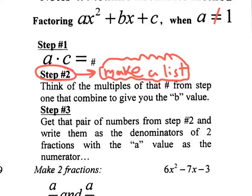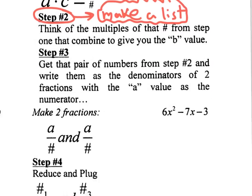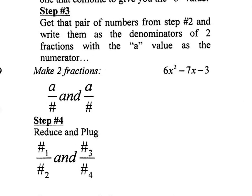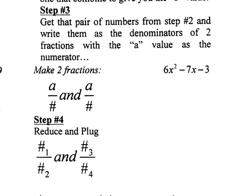After you make that list, you move on to think which pair of numbers gives you the B value, which is kind of like what we did before. But then step 3 is where it gets weird. Step 3 says get that pair of numbers from step 2 and write them as the denominators of two fractions with the A value as a numerator.